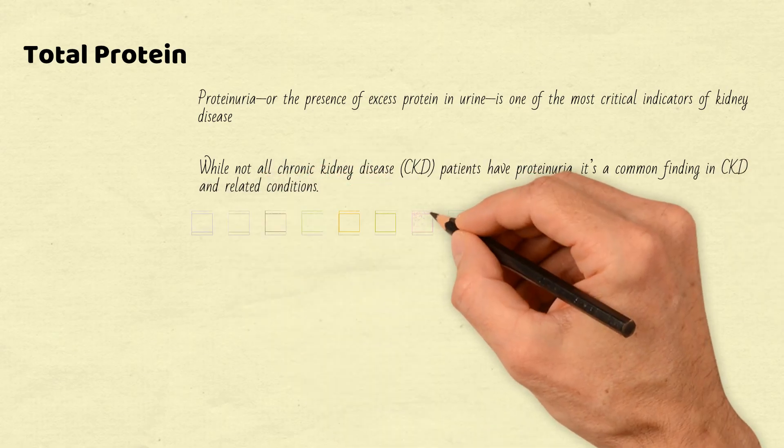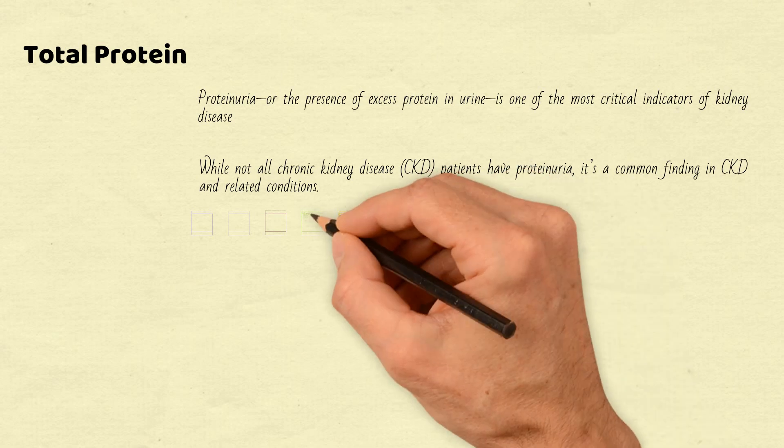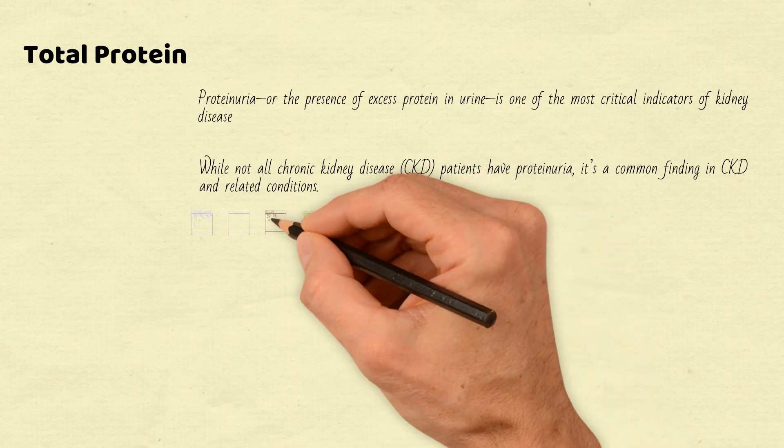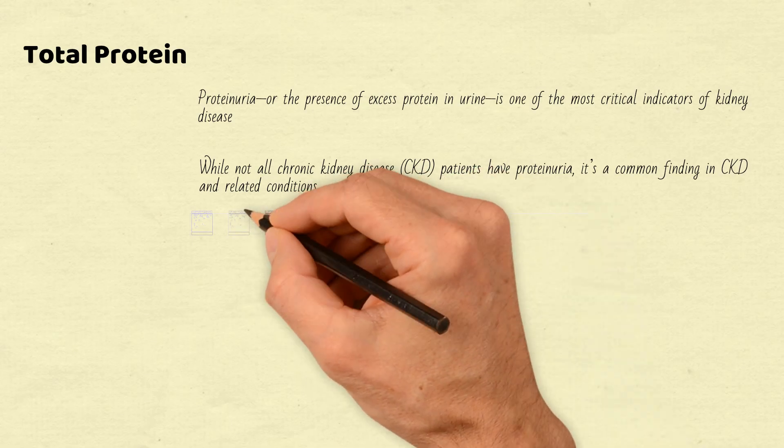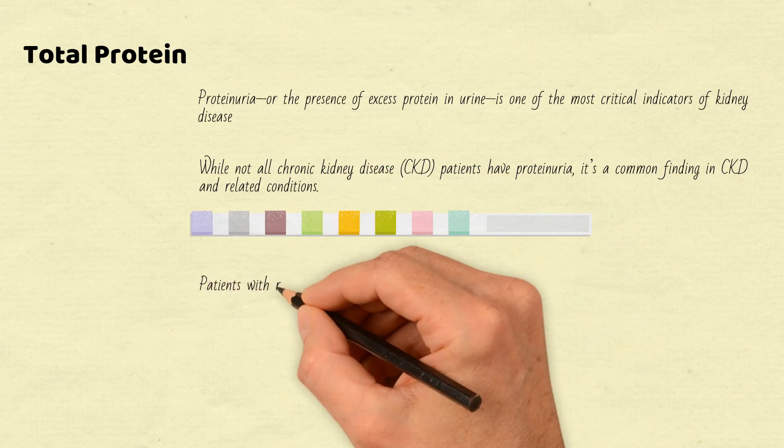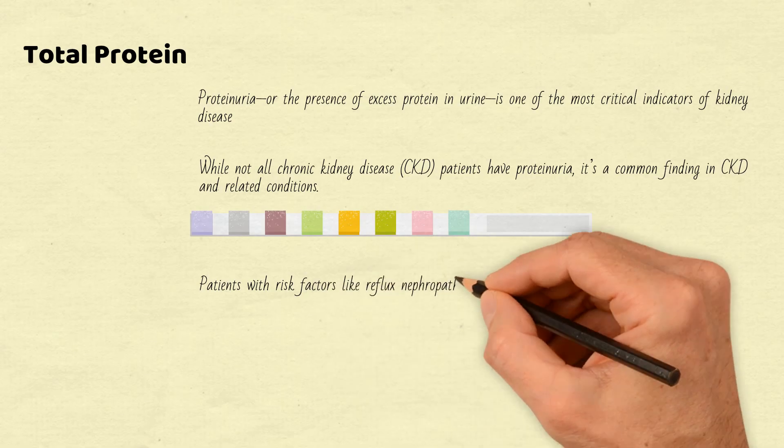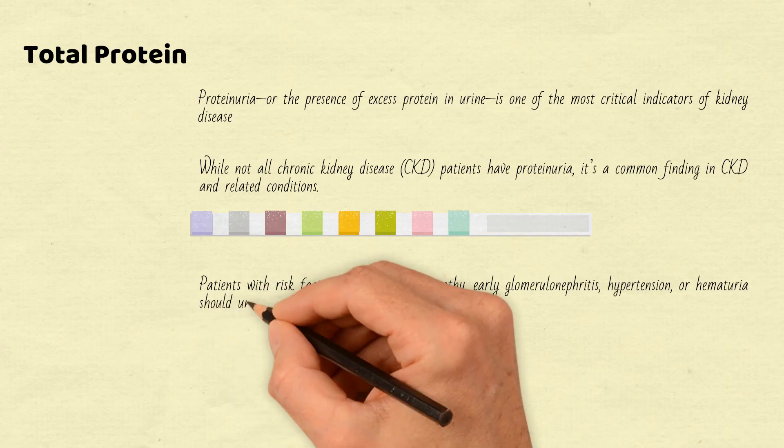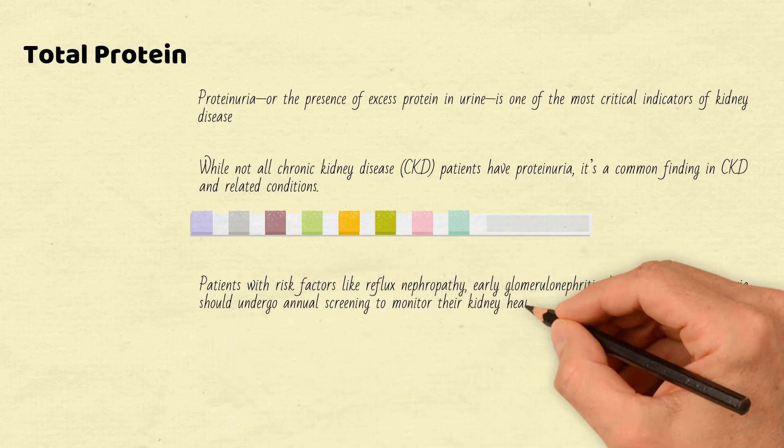To detect proteinuria, testing is essential. The reagent strip assay is often the first step, providing a quick and easy way to screen for kidney disease. Patients with risk factors like reflux nephropathy, early glomerulonephritis, hypertension, or hematuria should undergo annual screening to monitor their kidney health.